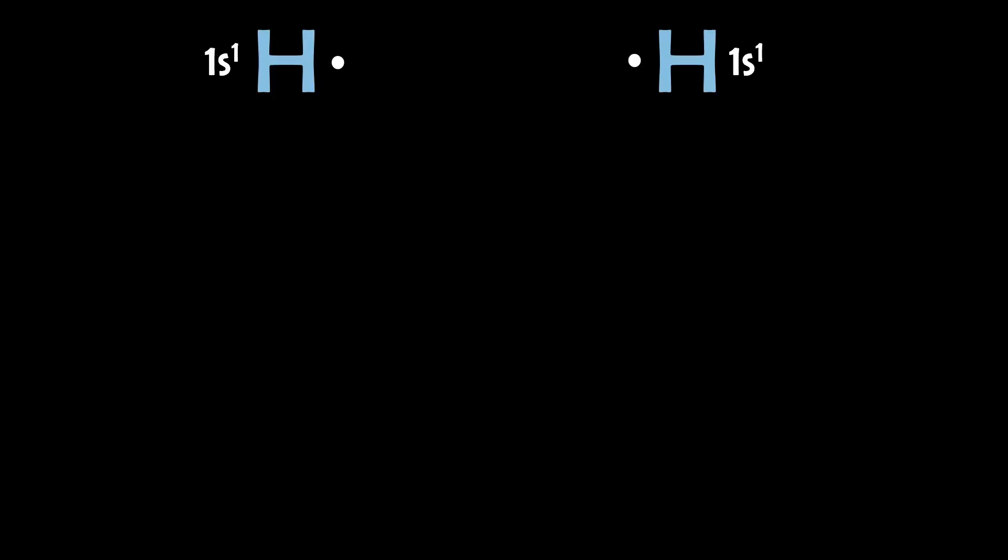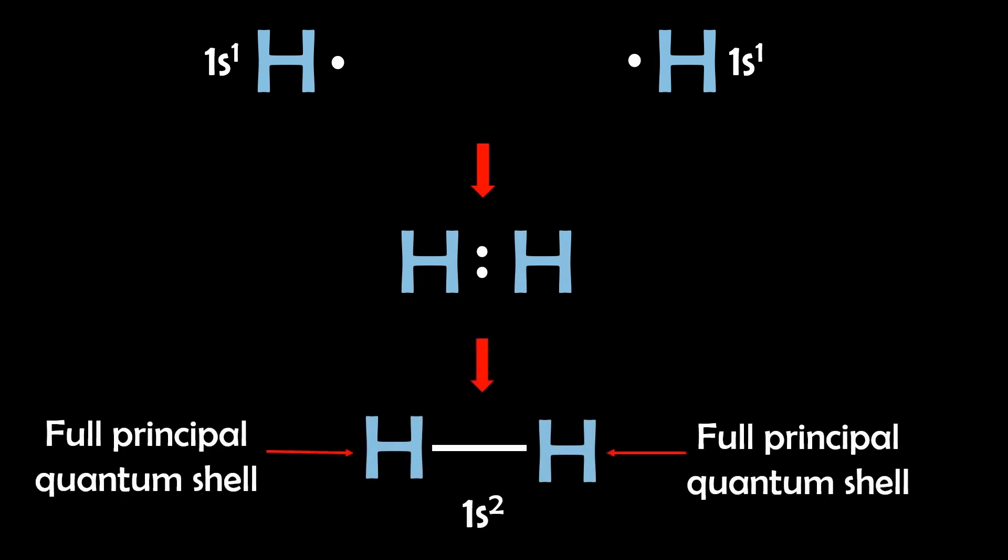So for example, hydrogen atoms seek to bond in a way that fills their outer shell with 2 electrons, achieving a full principle shell.